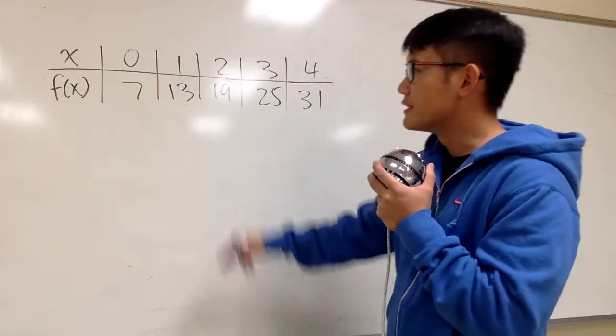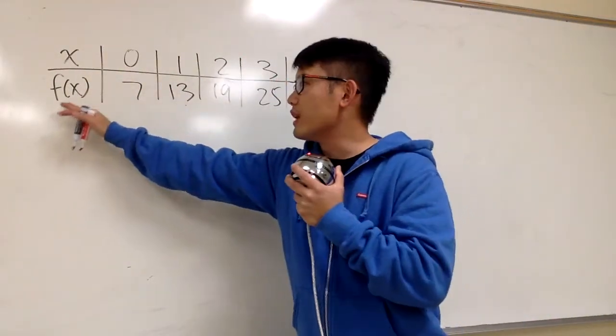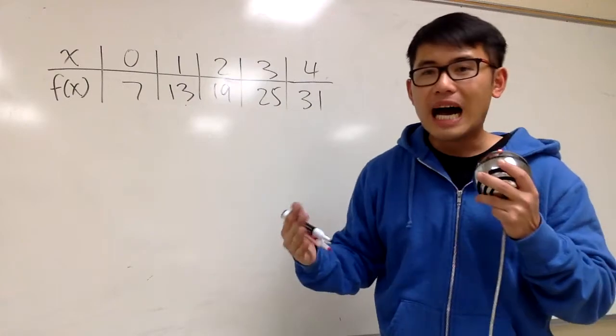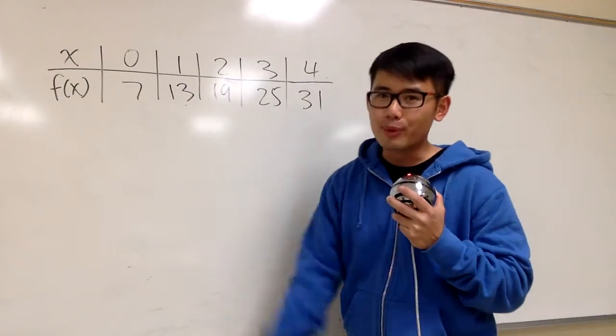In this question, we're given a table of some x values and some values for f(x), and we're going to see how we can describe this table.